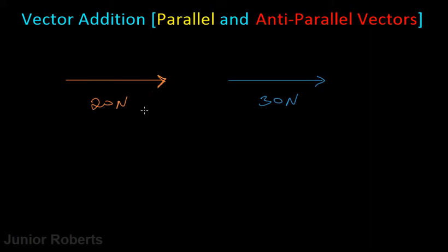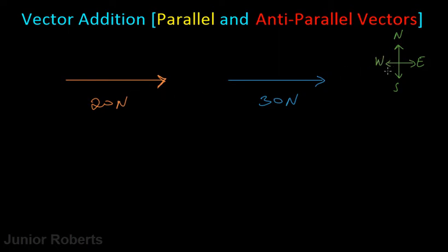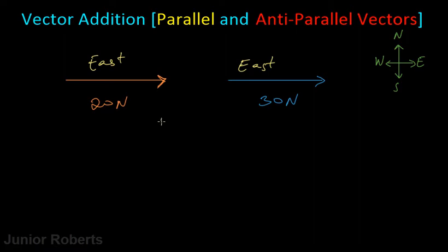We're given the magnitude of these two vectors, so let us consider our cardinal or compass points. We can consider this direction as north, this as east, and here would be west. Based on our compass points, we can see that these two vectors are going east, so they're going in the same direction. Therefore these two vectors are parallel because they're going in the same direction.